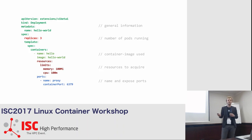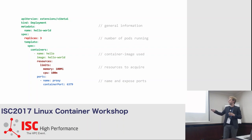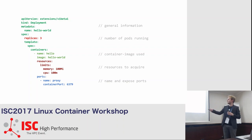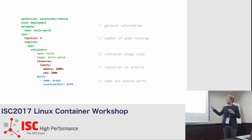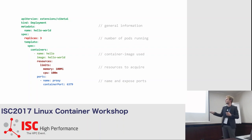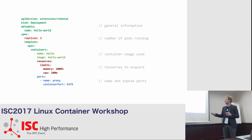This is a manifest — a description of how we want things running. For example, this says we want three replicas running. We define a pod template with specifications: we want a container running with the image hello-world. You can specify how many resources you want — for example, 100 megabytes of memory and 100 milli of a CPU. You can also expose ports.